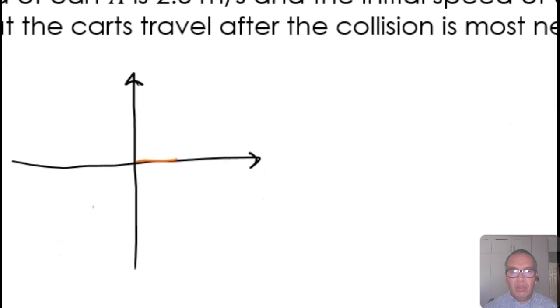the X component of the momentum before the collision is the same as the X component after the collision. This is a momentum initially carried only by cart A and is equal to 7.625 kg meters per second.